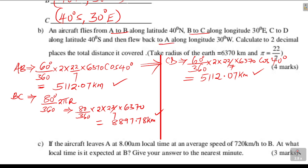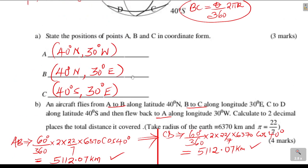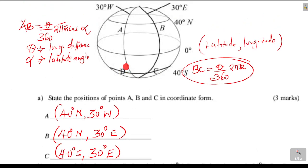Then back to A — the aircraft flew back. From D we move to A, so DA is the next distance. DA is the same distance as BC, because D and A lie on different latitudes but on the same longitude — both on longitude 30 degrees west. So the distance is along the great circle, using: theta over 360 times 2 pi R, where theta is the latitude difference.